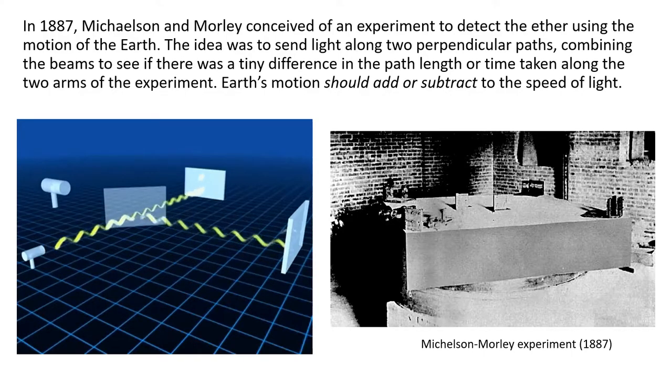Michelson and Morley in 1887 built an experiment to try and detect the ether using the motion of the earth. The idea is shown schematically in the diagram on the left. Light was sent along two perpendicular paths, by using a beam splitter, and then recombined. And the idea was to see if there was a tiny difference in the path length, or the time taken, for light to travel on the two arms of the experiment. Because in one arm of the experiment, earth's motion, in its orbit of the sun, should add or subtract to the speed of light. And in the other direction, perpendicular to that motion, should make no difference.